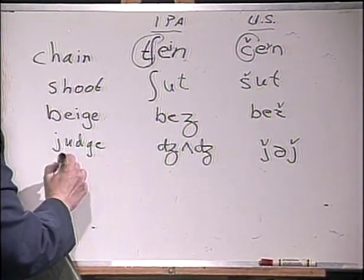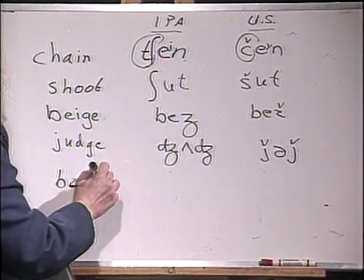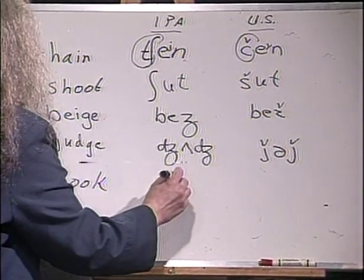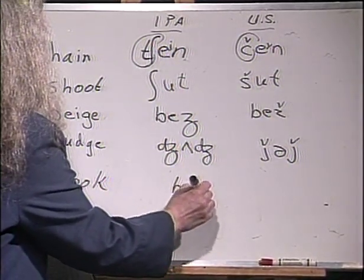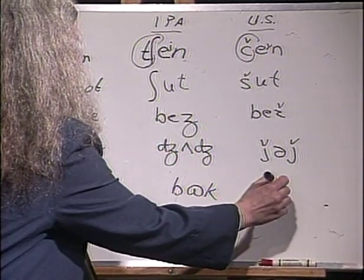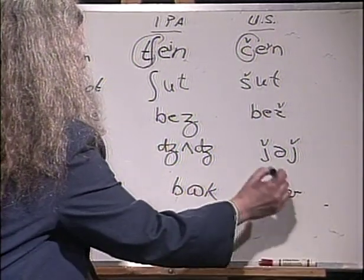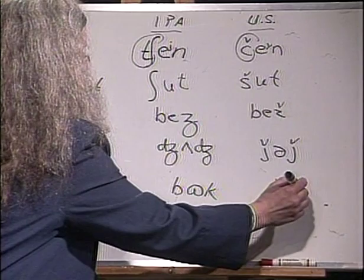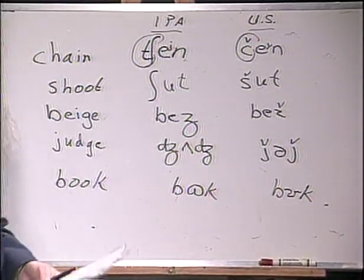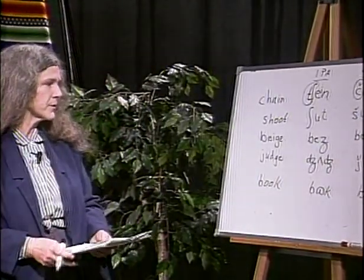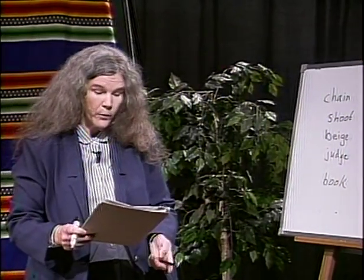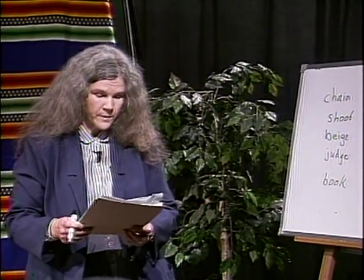There's also one vowel as in the word 'book', the U vowel, a sort of short U. In IPA that's done one way, and in the Americanist system you use what's sometimes called the 'bucket', a sort of elaborate U. That's just to give you an idea of some of the differences, but more is the same than different among the usage of all linguists around the world.